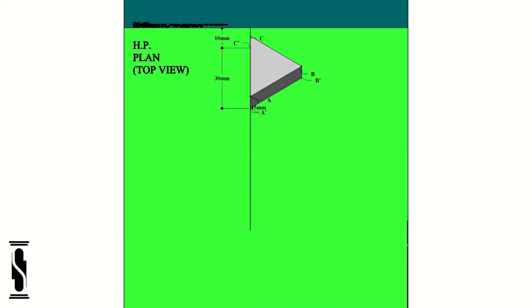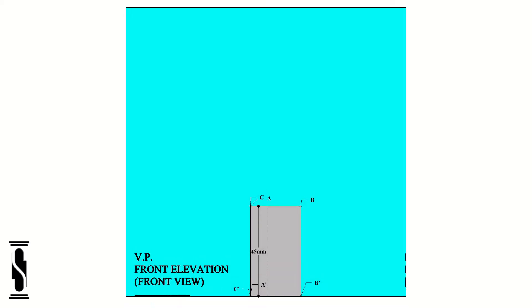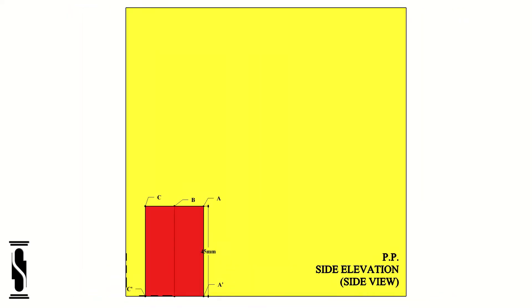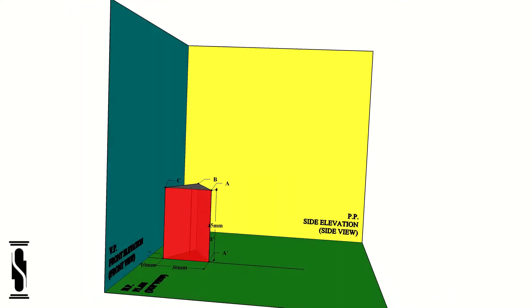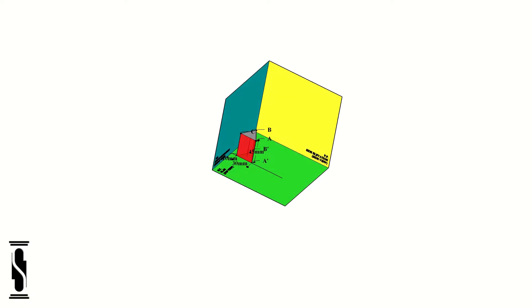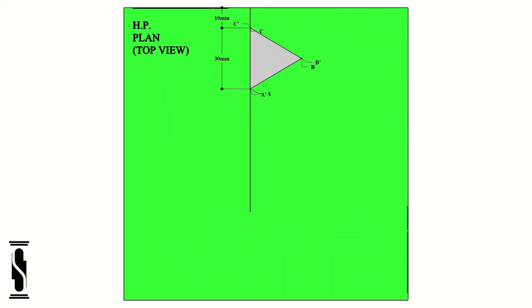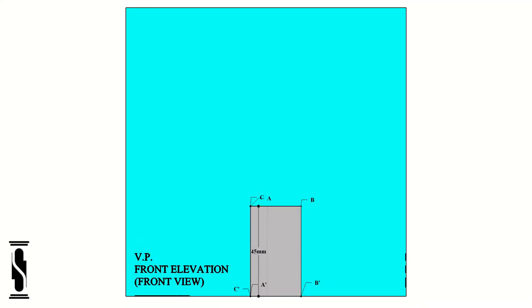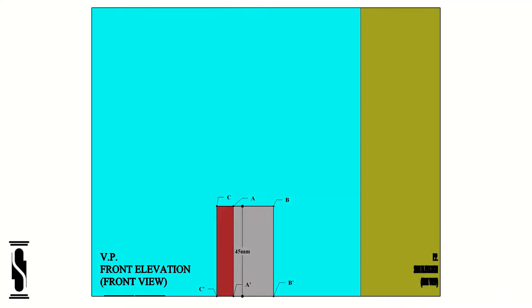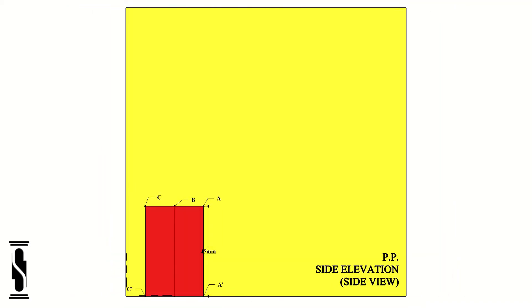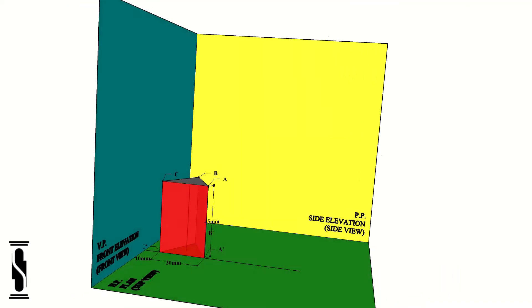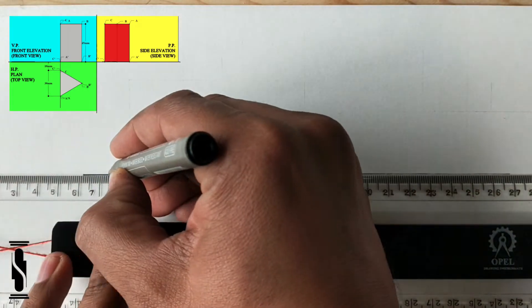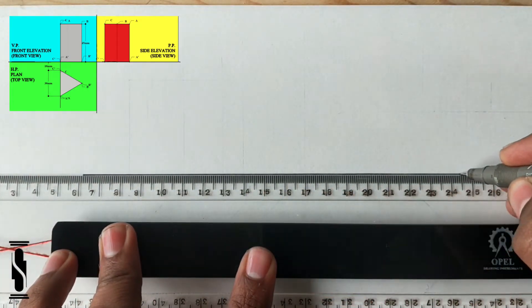We have to fulfill all these conditions to make the correct solution of the question. Always keep in mind, whenever you are drawing the orthographic projections, always start with that view in which the true shape of the object is visible — it could be the front view, side view, or the top view. In this case, the rectangular faces appear reduced in size in the front view, while the true shape of the triangular base is visible in the top view. So let's start to make the orthographic projection.